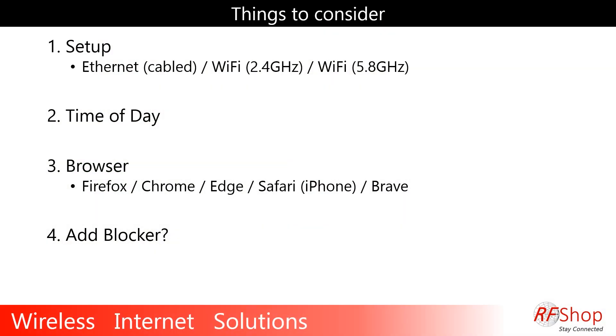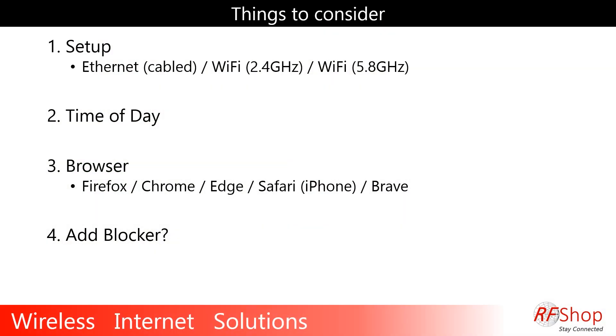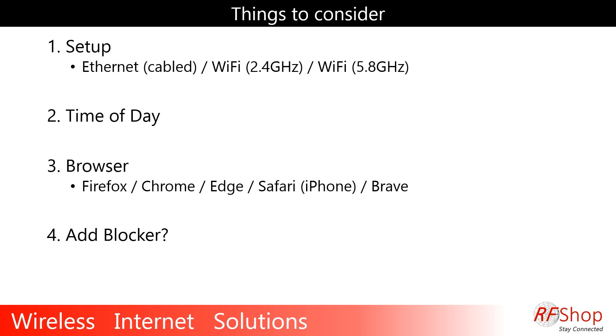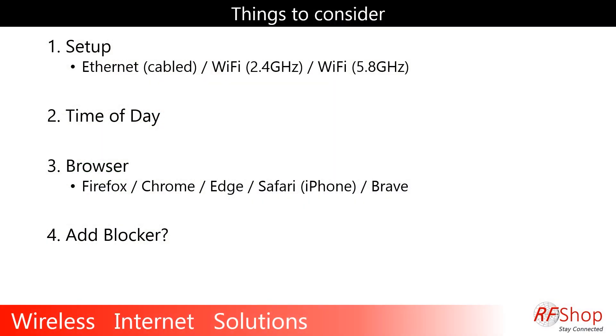In my test setup at home I looked at what I could do. There's the ethernet cable, there's Wi-Fi connections — and Wi-Fi can be a 2.4 or 5.8 GHz network. There's also the time of day to consider. I also looked at the browser used — Firefox, Chrome, Edge, Safari, and Brave — to see if there are significant differences. And of course the elephant in the room is ad blockers, because having advertisements running during your test is obviously going to cause issues with your throughput.